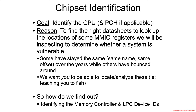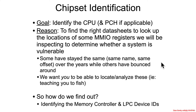Now it's time for you to go off and find which data sheets are applicable to you. Our goal is to identify the CPU and PCH as applicable to find which data sheets matter. We need to find these data sheets because we're going to be looking at some memory-mapped IO registers to understand whether the system is vulnerable. Some of these registers have stayed the same over time and others have moved around, so you need a bit of flexibility to find things in the data sheets.